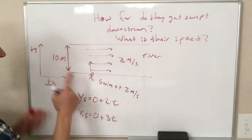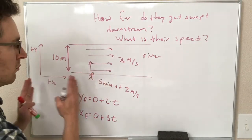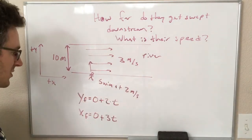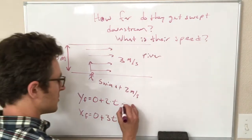and their velocity in the x direction is this 3 meters per second. So they're swimming up, but at the same time, they're getting moved right by the river, which is scrolling to the right at 3 meters per second. Okay, so this is just equal to 2t,